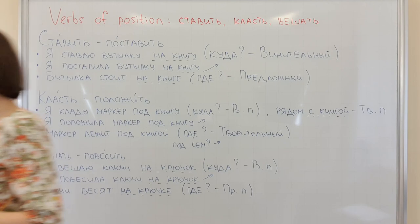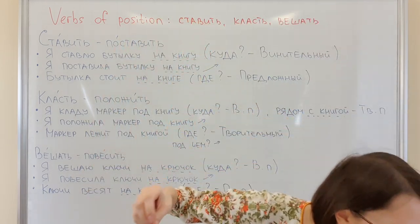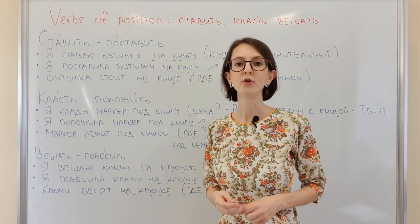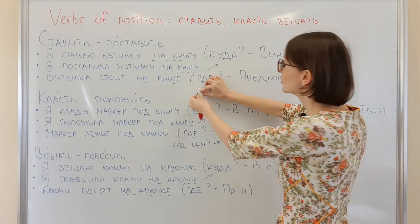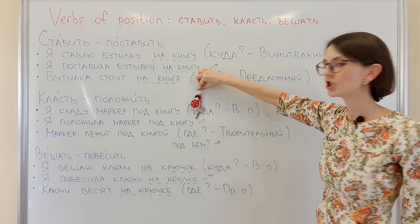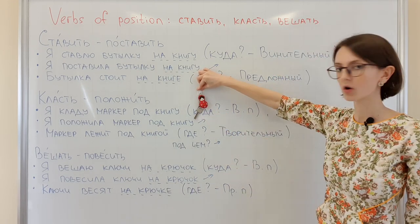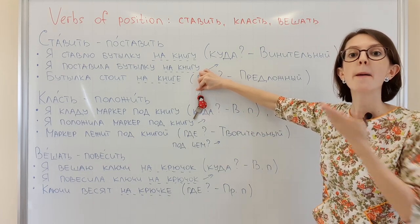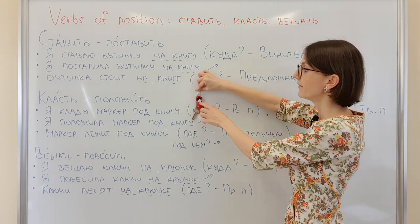Let me show you an example. Это крючок — this is a hook. Это ключ. Я вешаю ключ на крючок — this is the action. Я повесила ключи на крючок — the action is completed. Ключи висят на крючке — location.